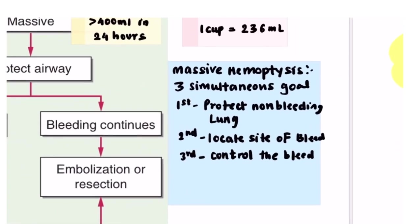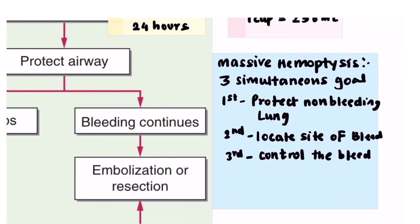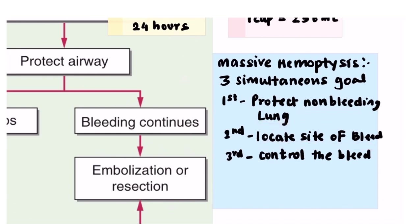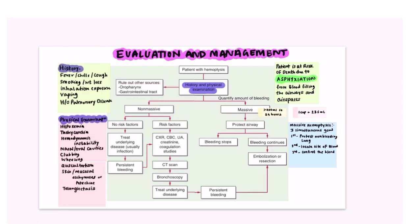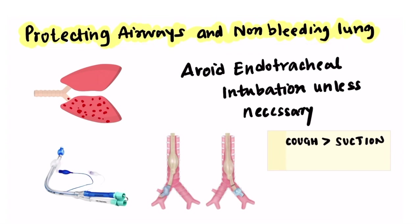In cases of massive hemoptysis, there are three simultaneous goals: first, protect the non-bleeding lung; second, locate the site of bleeding; and third, control the bleeding. Protecting the airway and non-bleeding lung is an important step — position the patient so that the bleeding lung is downwards, so gravitational force prevents blood from entering the non-bleeding lung.